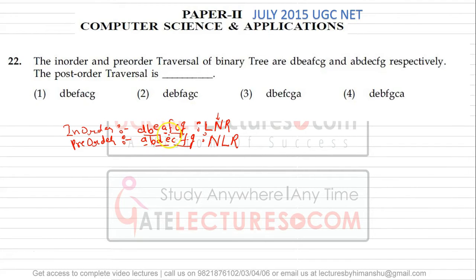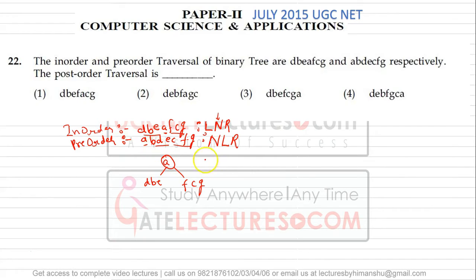In both traversals we find the root is A, so we start constructing the tree. A is your root. D, B, E is your left subtree and F, C, G is the right subtree. Applying in-order on the left subtree, B is the root and D and E are its left and right children respectively.